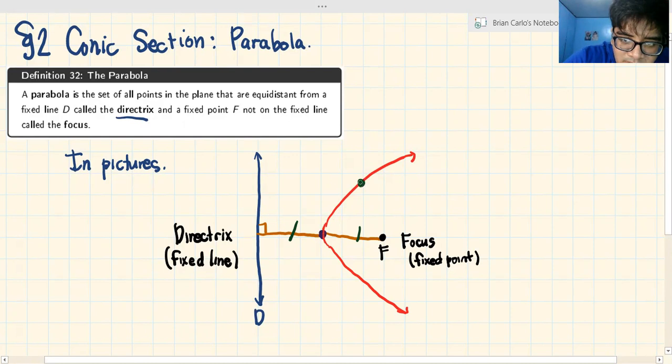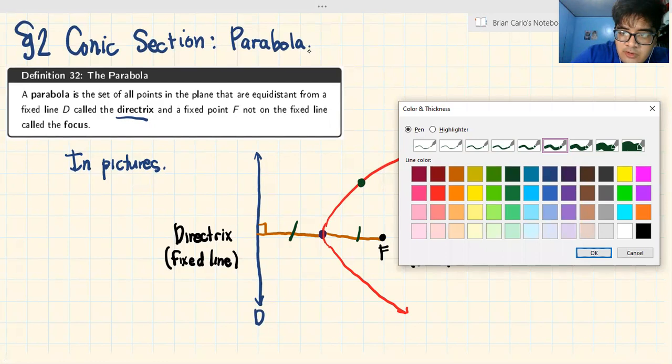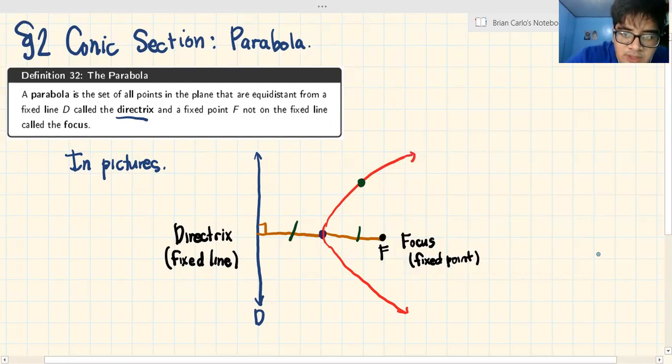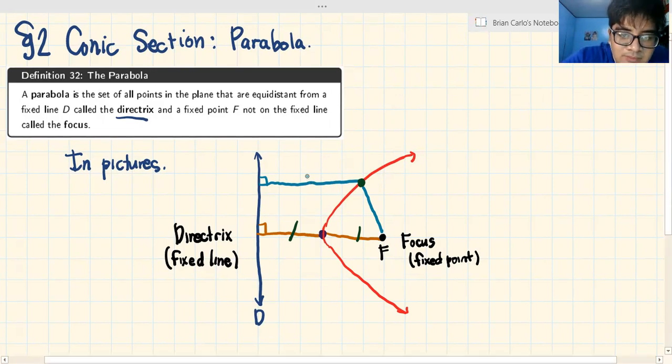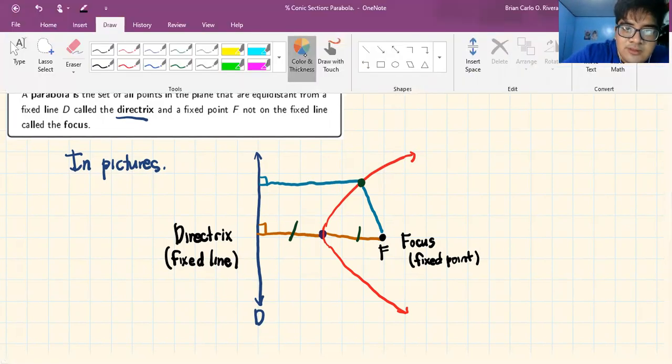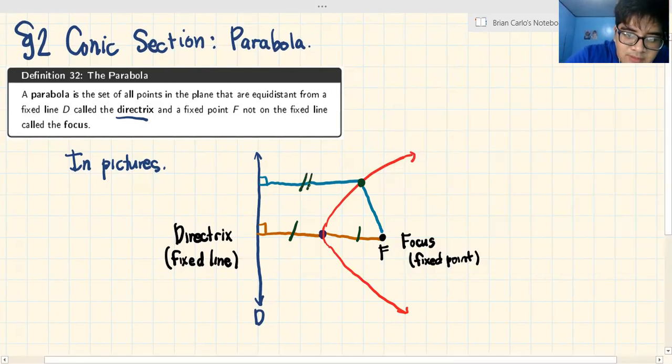Let's get another one to get the idea. We have this point. Let's use this shade of blue. The distance from this point to the focus, to the fixed point, is equal to the distance from the directrix. Remember it's always the perpendicular distance. These two are congruent, equal distance.